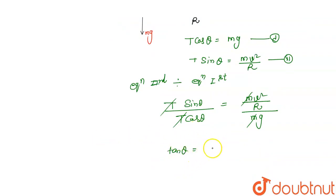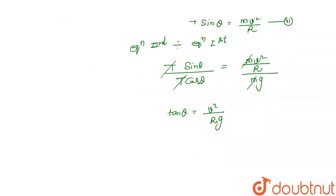So tan theta equals v² divided by Rg, and therefore theta equals tan inverse of v² divided by Rg. The angle theta is tan inverse v² by Rg.